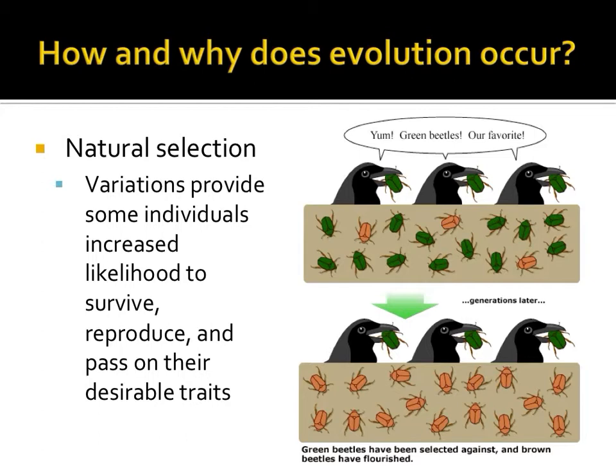The picture on the right illustrates this process. If birds like the taste of green beetles more, or if green beetles are not as camouflaged to their surroundings, then over many generations, the population of beetles may change. Instead of the majority of the bugs being green in color, exhibited on the top, the orange-colored bug may become more and more common.